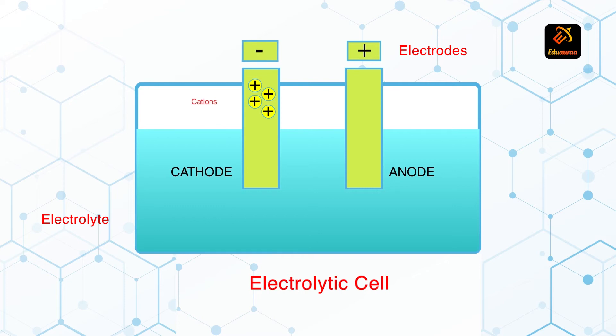That means what will the cathode itself be? The cathode itself will be negative, because we have already learned that opposite poles attract each other.